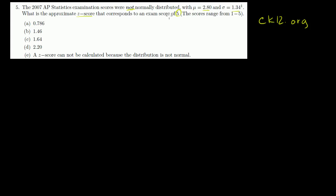Well, we just take 5 minus 2.8. The mean is 2.8, let me be very clear. They give us that. Didn't even have to calculate it, right? So the mean is 2.8.